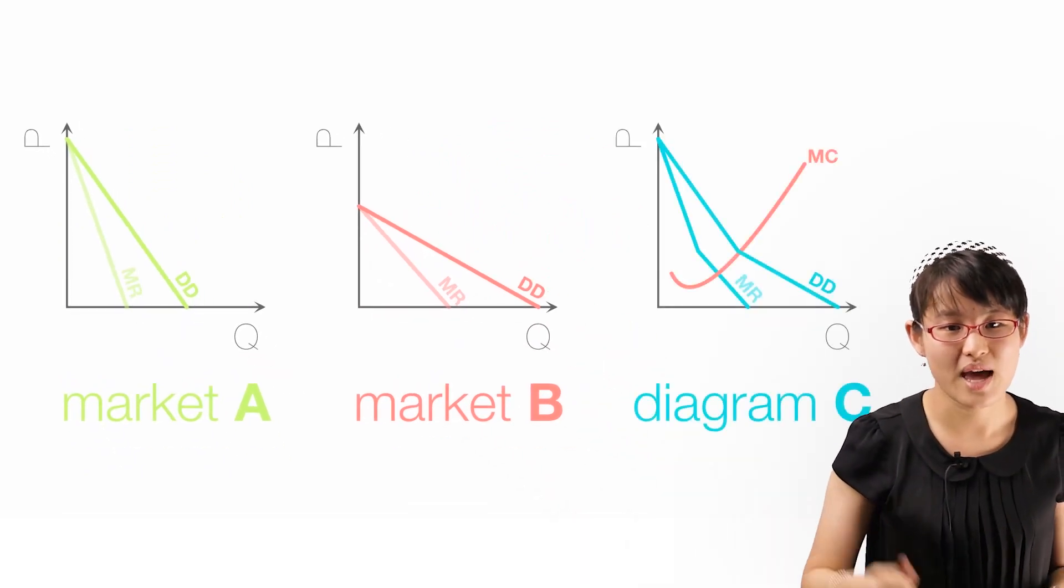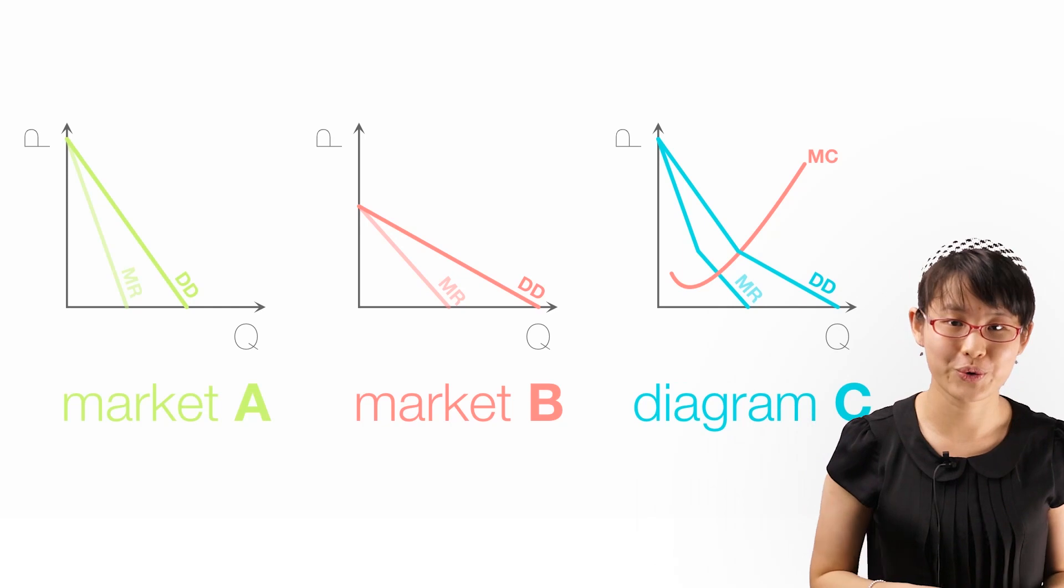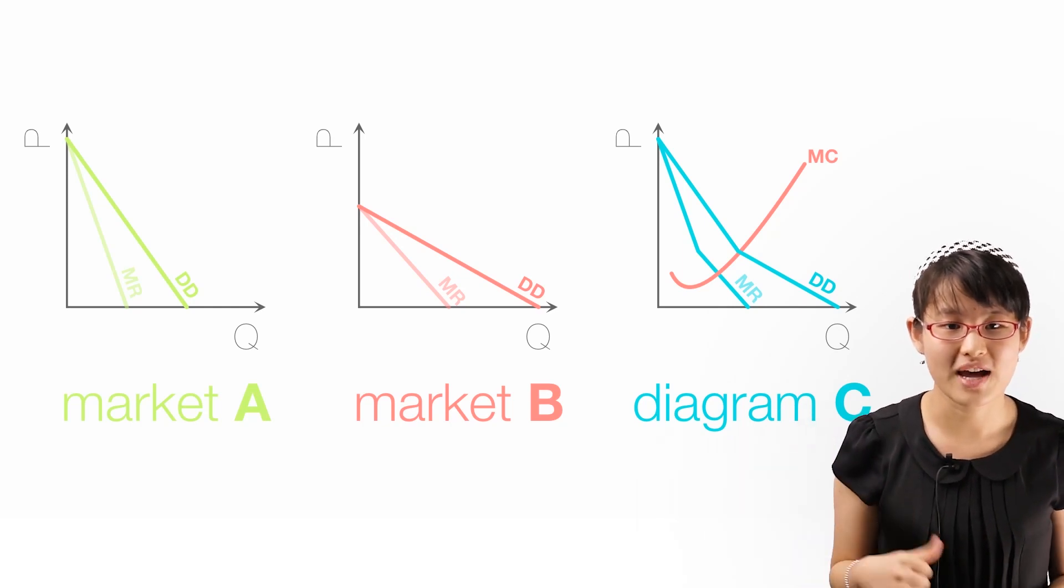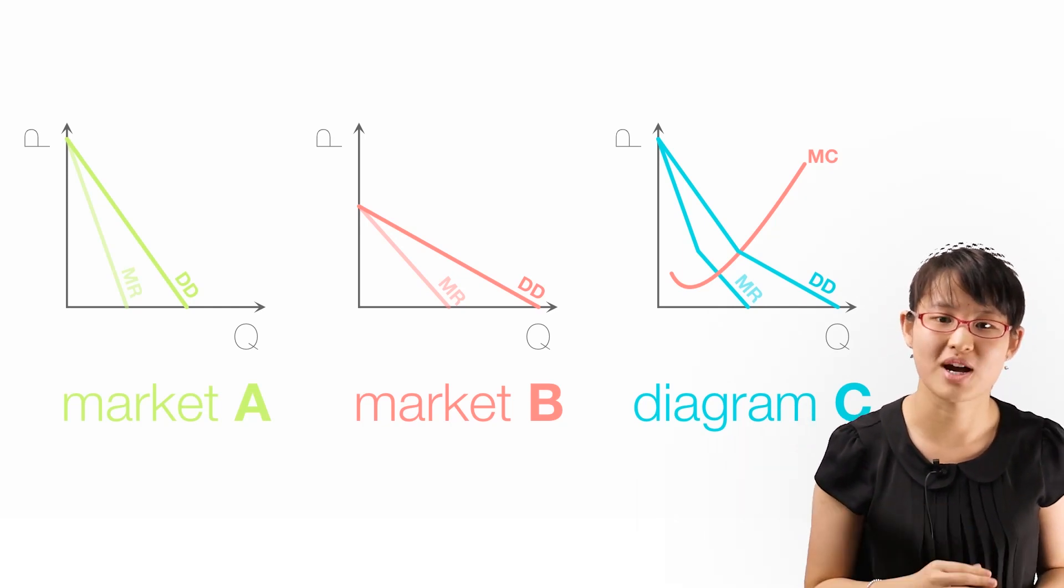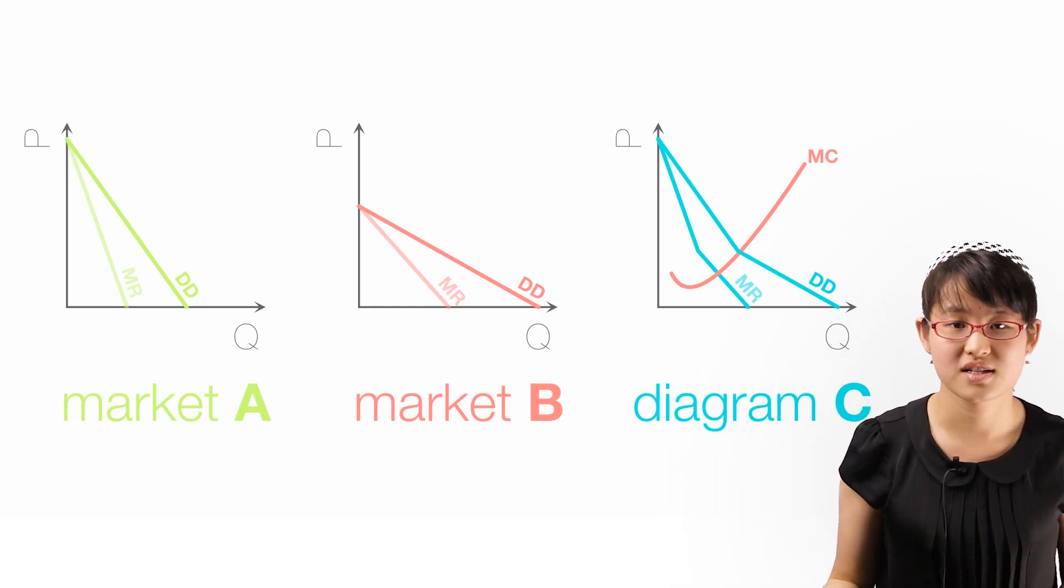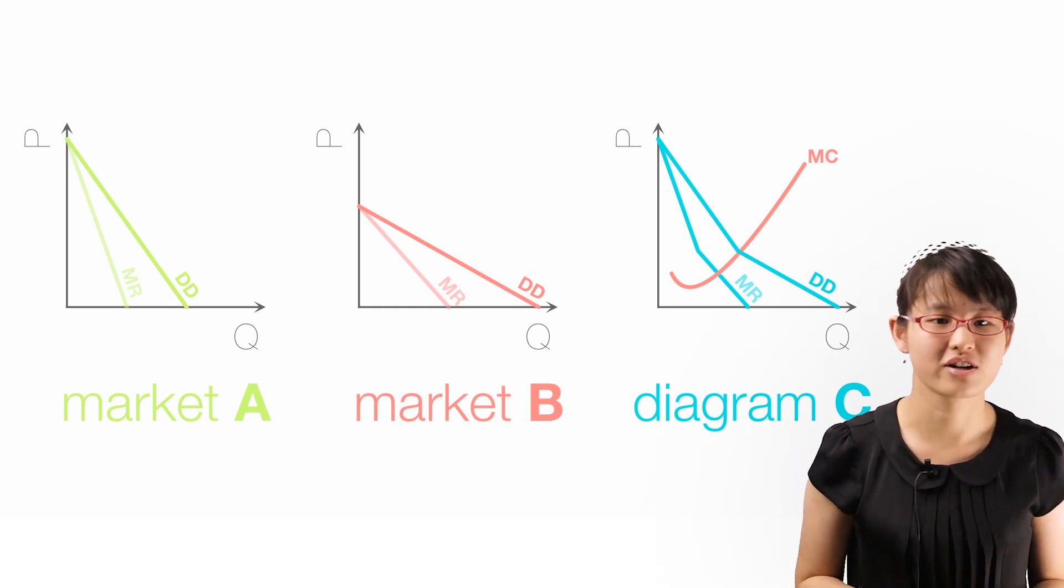Diagram C shows the MC and MR curves for the firm as a whole. This MR curve is found by adding the amount sold in two markets at each level of marginal revenue. In other words, it is the horizontal addition of the two MR curves.